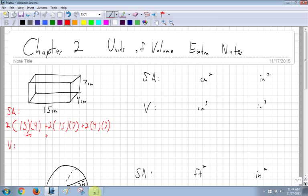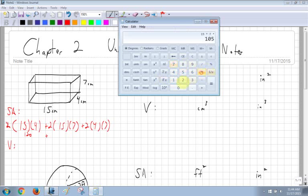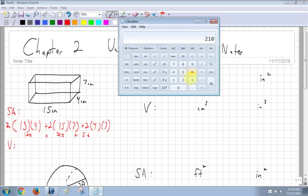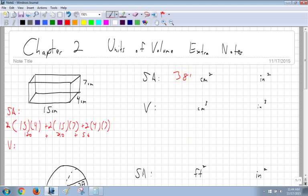So I get 15 times 4 times 2, which is 120. And then I get 15 times 7 times 2, which is 210. And then 4 times 7 is 28 times 2 is 56. So then I add those values together. So I have 210 plus 120 plus 56, which is 386 centimeters squared.